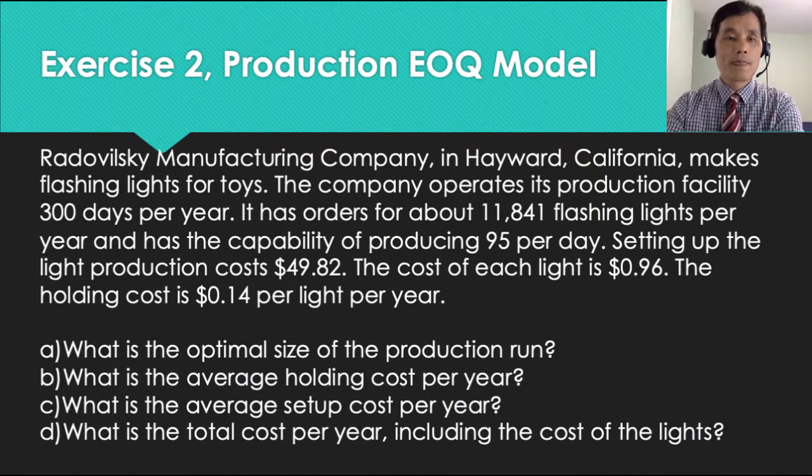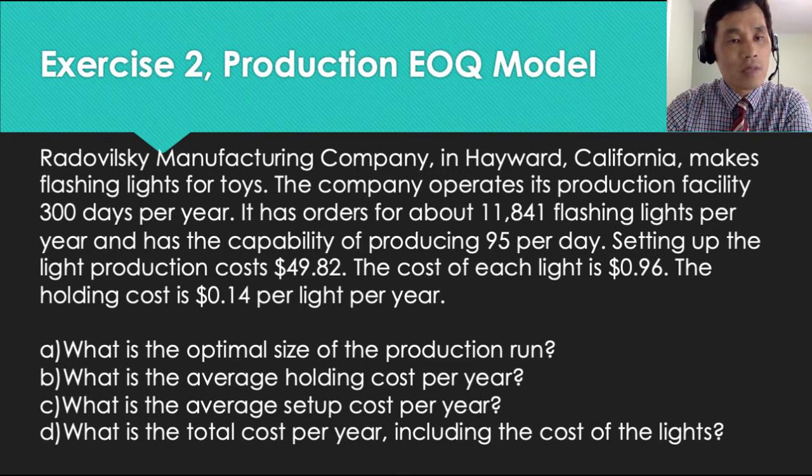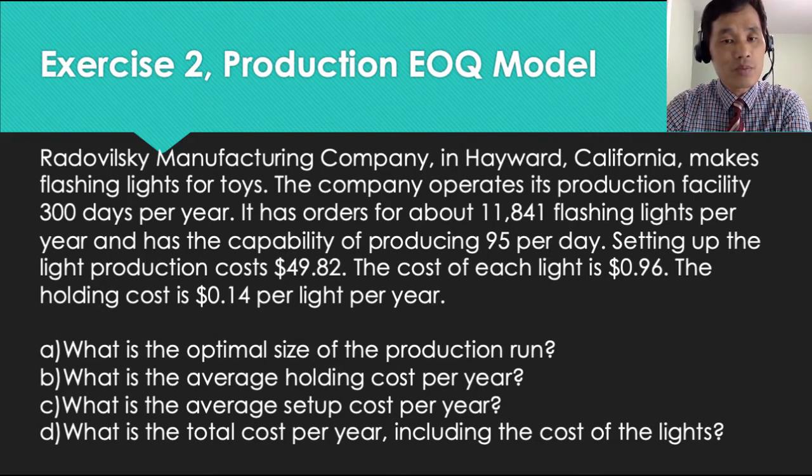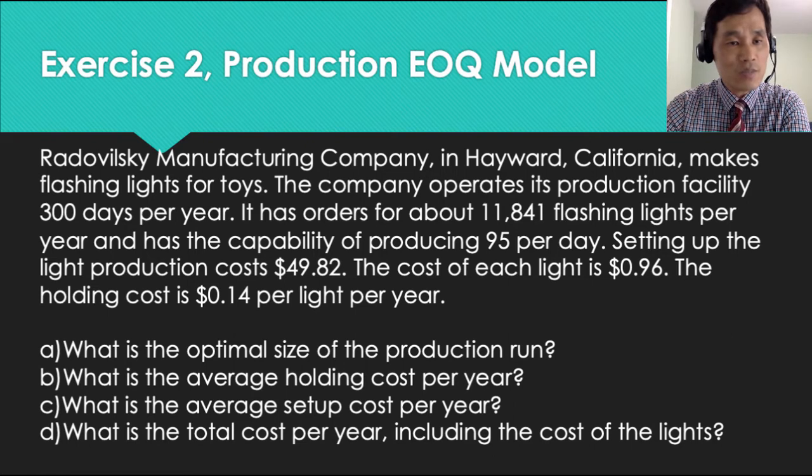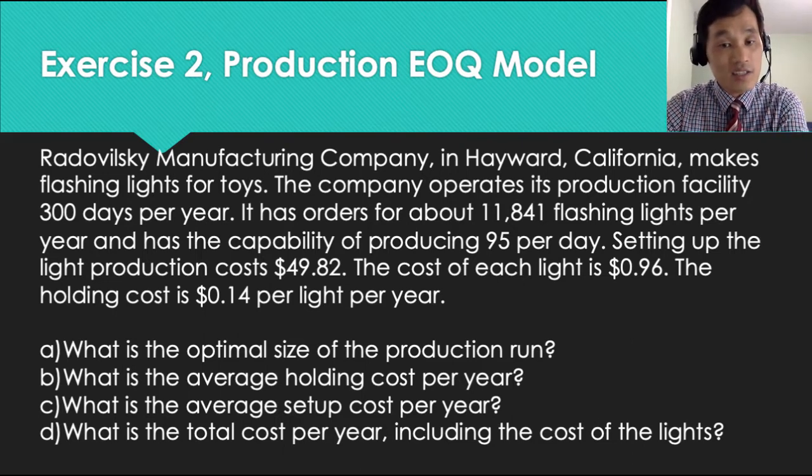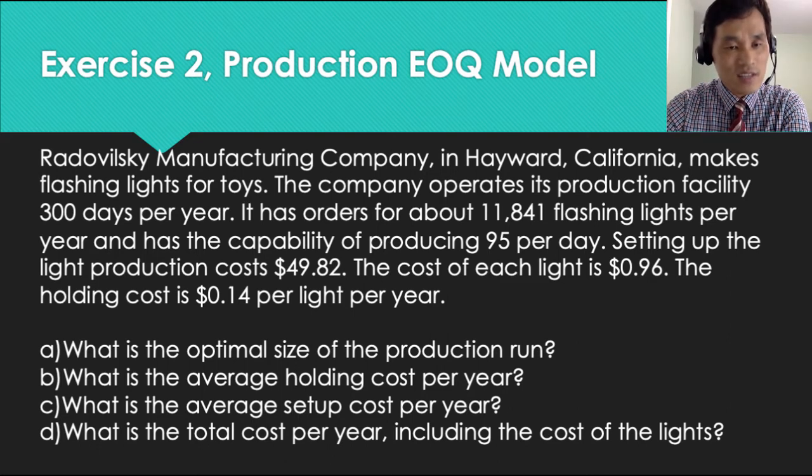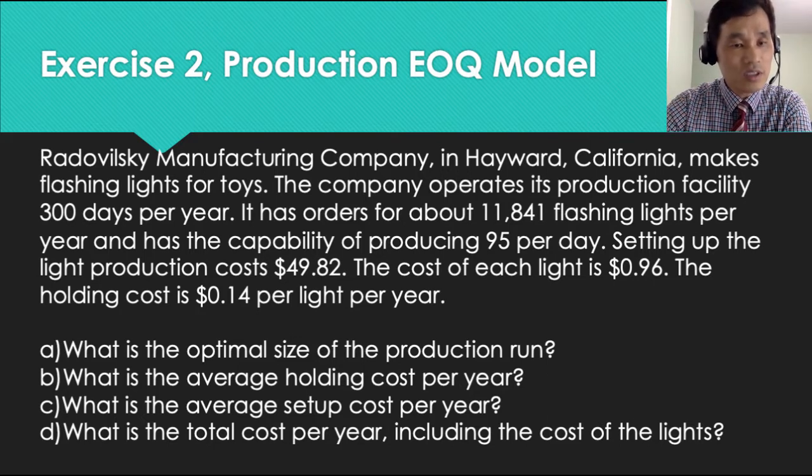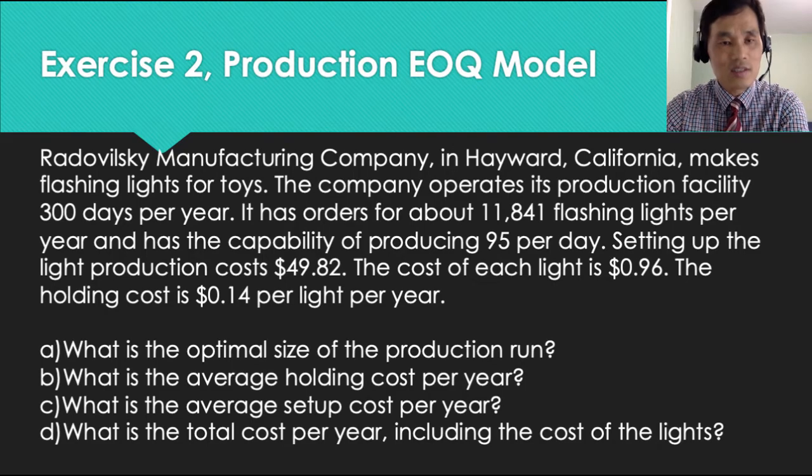Here's the second exercise. Let me read it for you. Redow Filiski, a manufacturing company in Hayward, California makes flashing lights for toys. The company operates its production facility 300 days per year. It has orders for about 11,841 flashing lights per year and has the capability of producing 95 per day. Setting up the light production costs $49.82, the cost of each light is $0.96, and the holding cost is $0.14 per light per year. What is the optimal size of production run? What is the average holding cost per year and the average setup cost per year? And what is the total cost per year, including the cost of the lights?